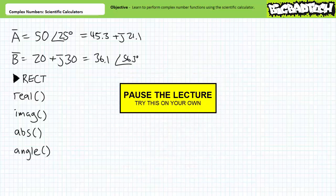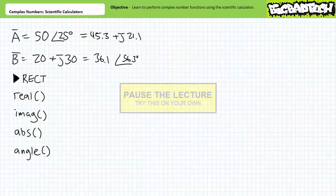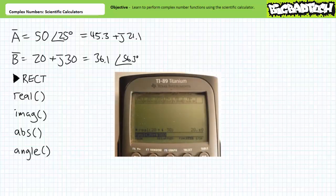By all means, pause the lecture and attempt to isolate the individual components of complex number B using the scientific calculator. You can enter complex number B using any format you want — rectangular or polar. The calculator is smart enough to recognize the exact data you seek. If you're tracking, you should have obtained: the real horizontal X component of B is 20, the imaginary vertical Y component of B is 30, the magnitude of B is 36.1, and the angle of B is 56.3 degrees.